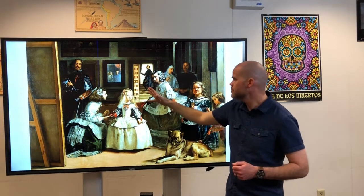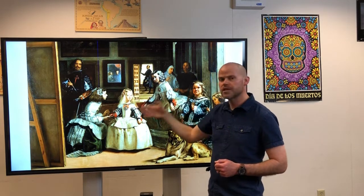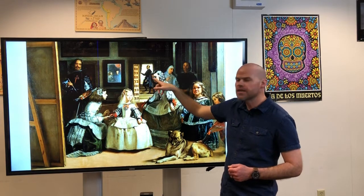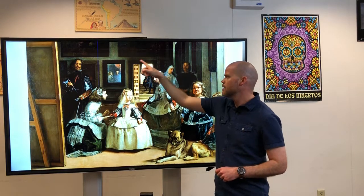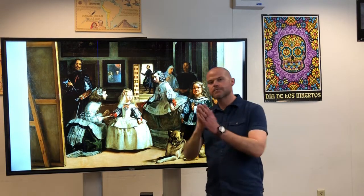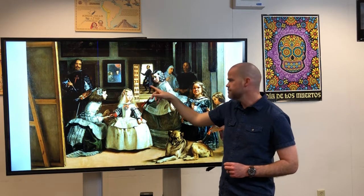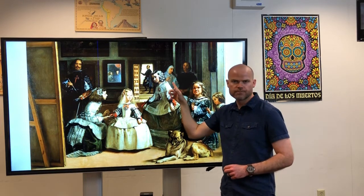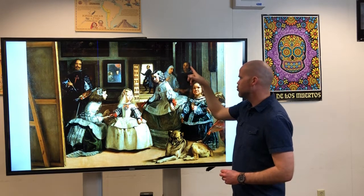Al lado y también detrás de las niñas, al lado del espejo y detrás de las niñas, hay otro hombre. Este hombre lleva un traje negro y está en la puerta. La puerta está abierta y hay un hombre con un traje negro aquí. También detrás de las niñas hay una monja. Al lado de la monja hay otro hombre.